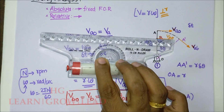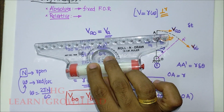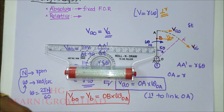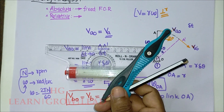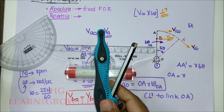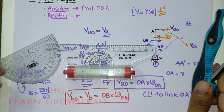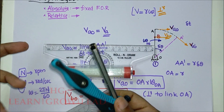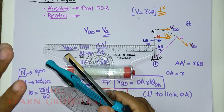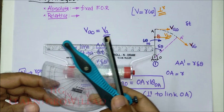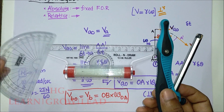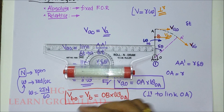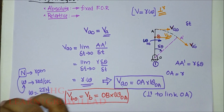If you have a ruler scale — typically 15 cm and 30 cm — along with a protractor and a compass, you can draw parallel and perpendicular lines using a set square. These tools are required for the graphical relative velocity analysis. In the next lecture, a complete relative velocity analysis problem will be solved.